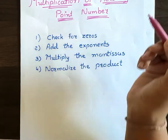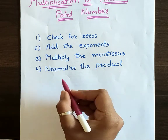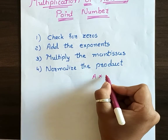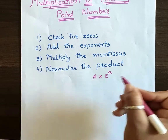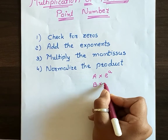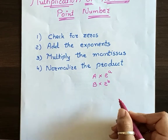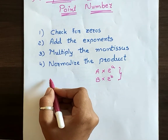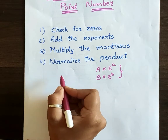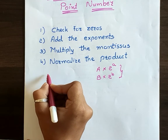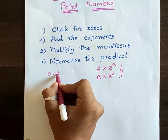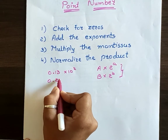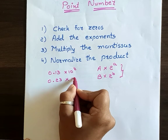So how will it be done? Basically, if we have one number A into 2 raised to A, and B into 2 raised to B form — this is in binary form. Let us take an example with decimal numbers: suppose I am having 0.13 into 10 squared and 0.23 into 10 cubed.